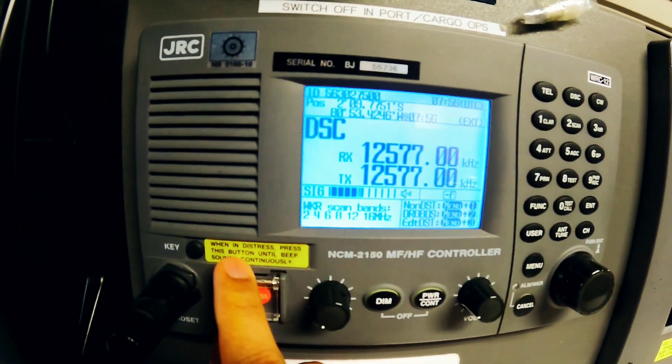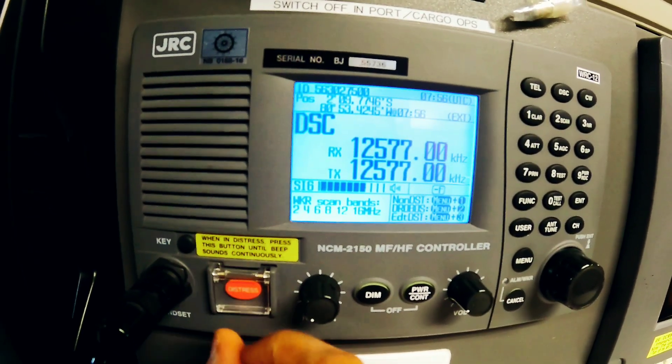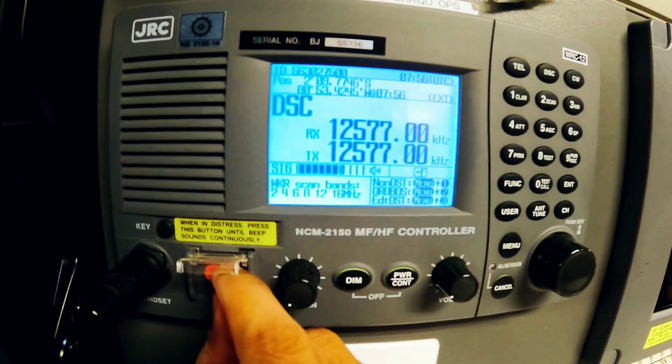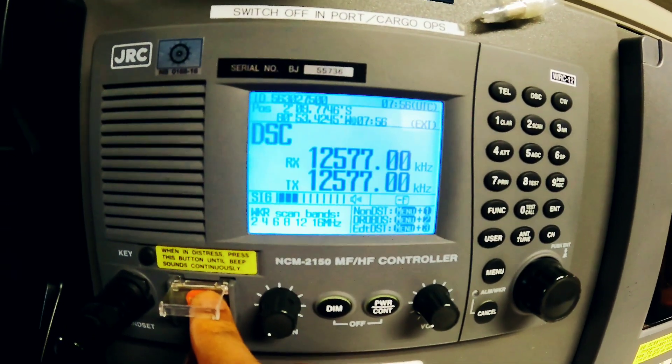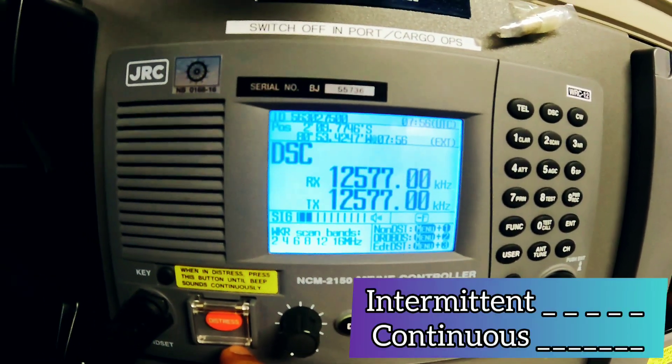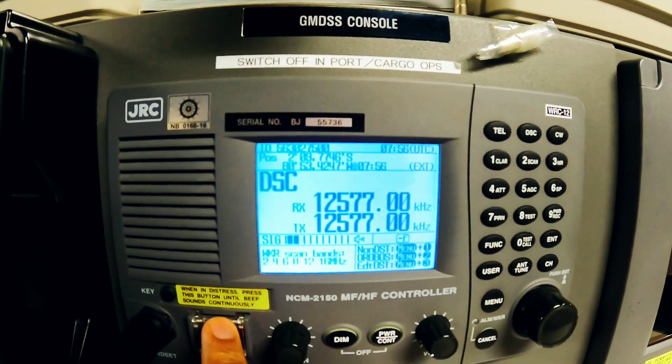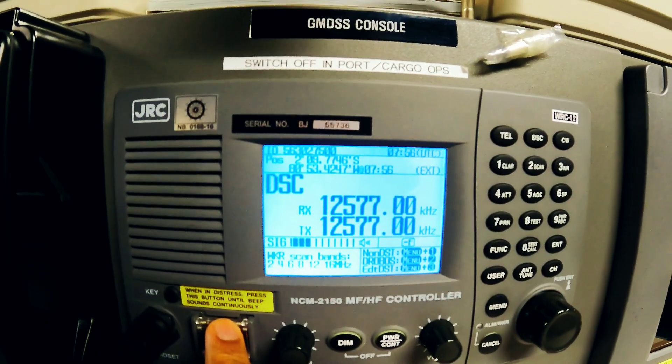When you press it for four seconds, it will be an intermittent sound, and after four seconds it will be a continuous sound, which means that your message is transmitted. This was about undesignated transmitting of a DSC message or a DSC distress alert by MFHF equipment.